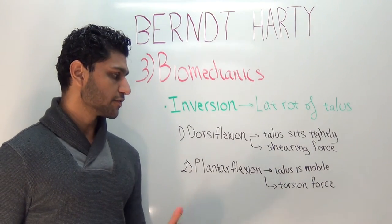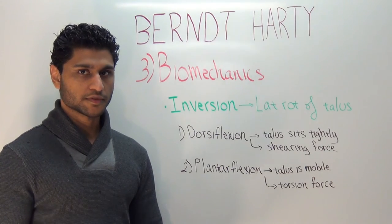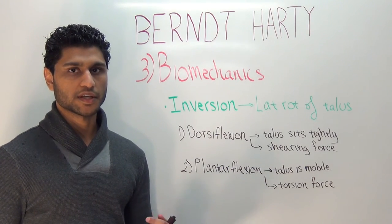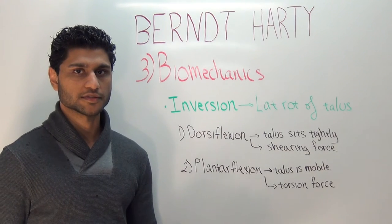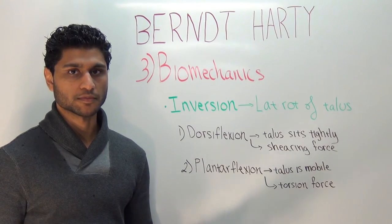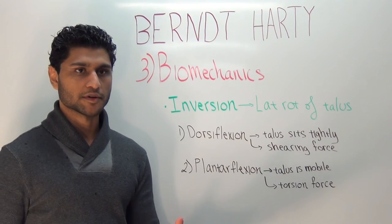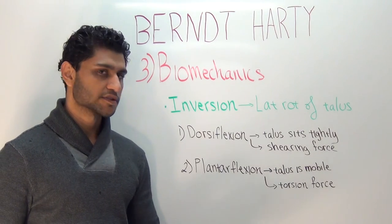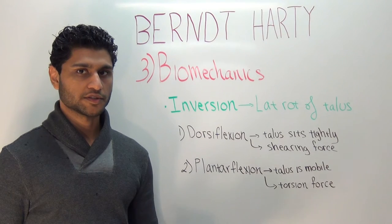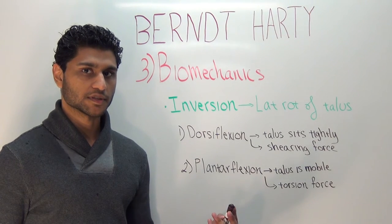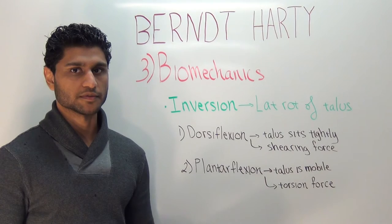During plantarflexion, the narrow posterior half of the talus sits loosely within the ankle mortise and is stabilized by ligaments and tendons. This configuration is more mobile. As the talus rotates laterally, a torsional force causes direct axial impaction against the articular surface of the tibia, thereby producing a posteromedial lesion.